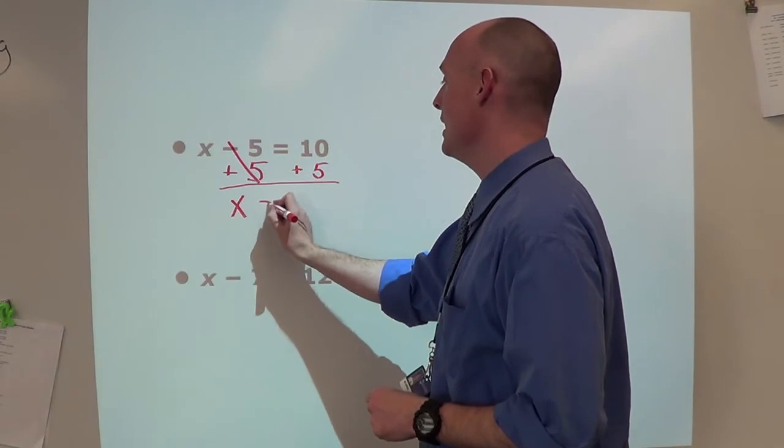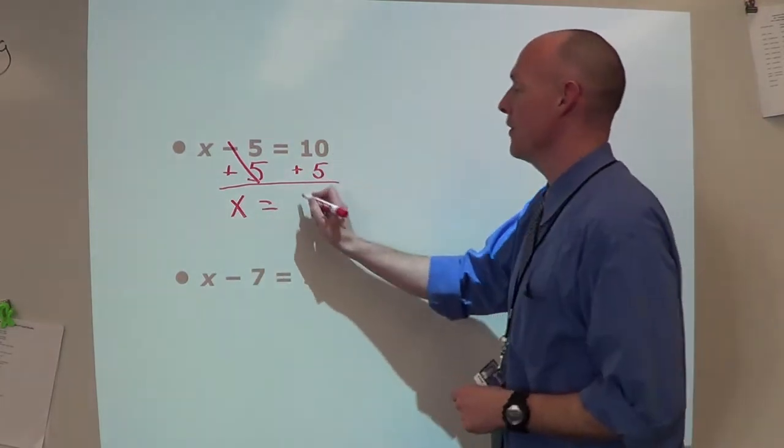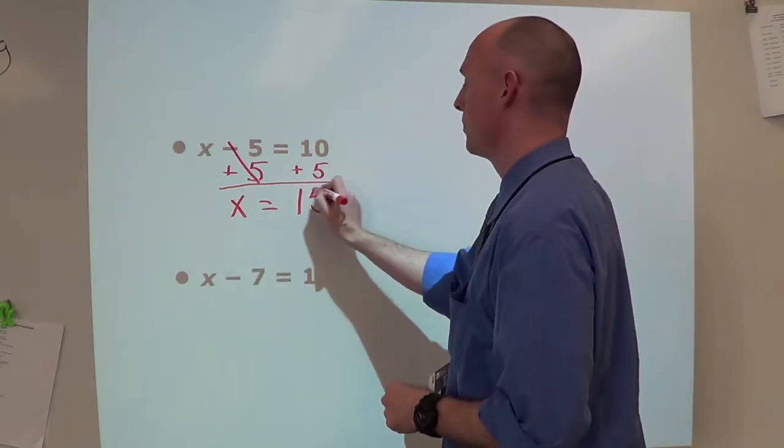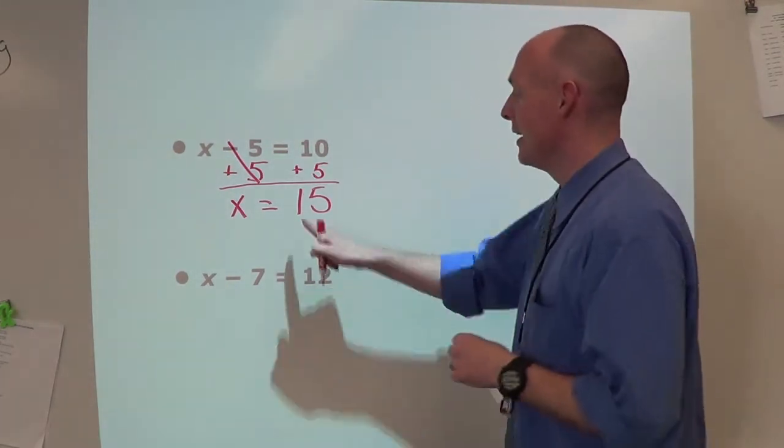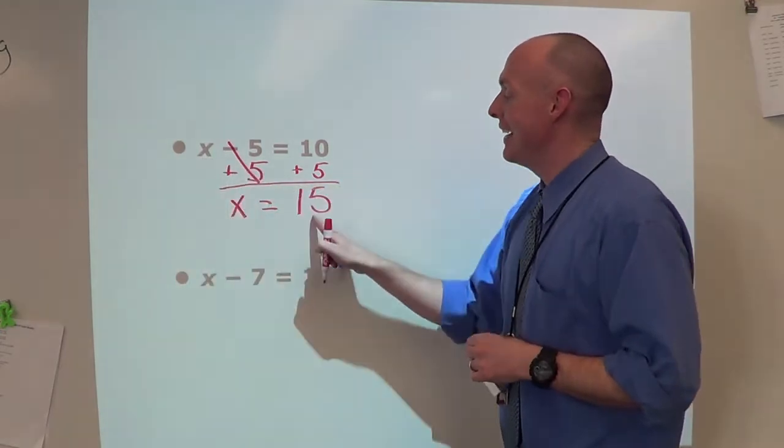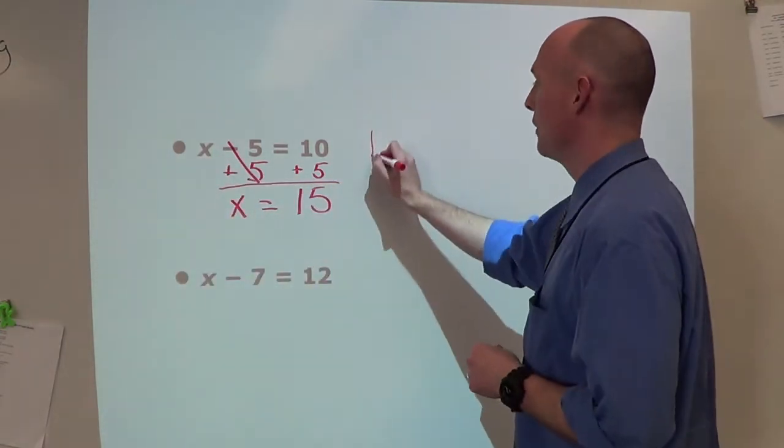We're left with x equals 10 plus 5 - that's 15. x equals 15. Now we just solved. We can check: if I plug 15 in for x, 15 minus 5 equals 10. Is that a true statement? It is, we're good to go.